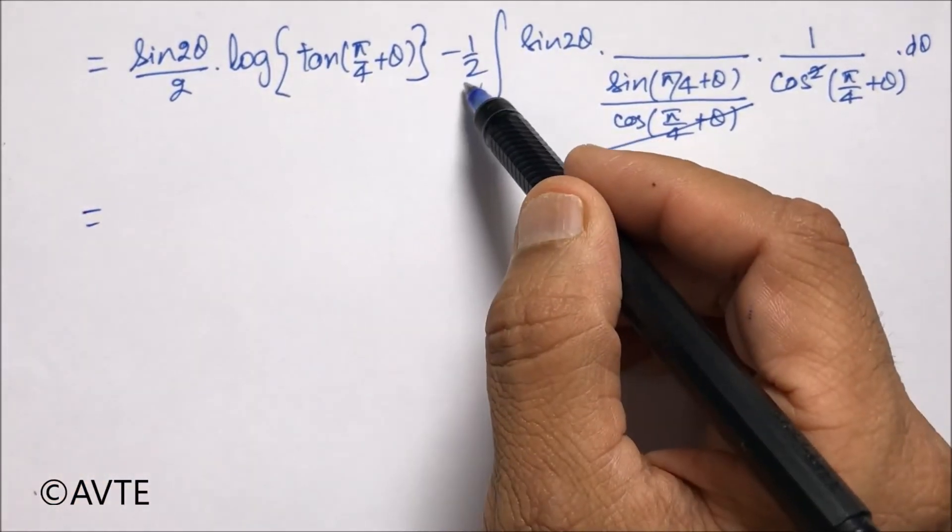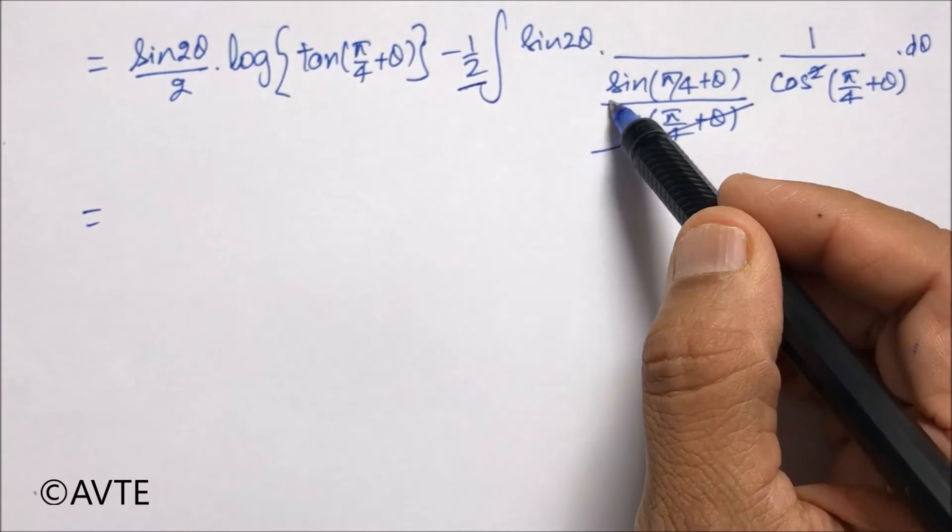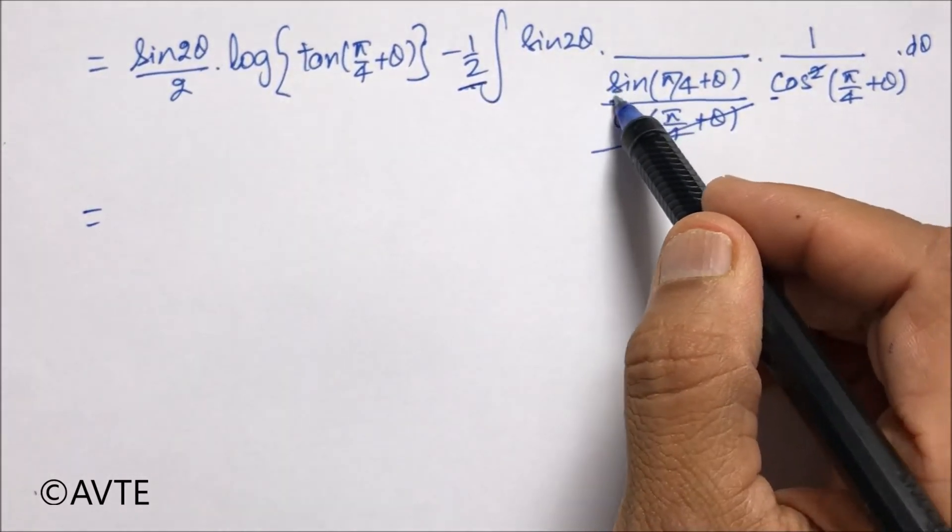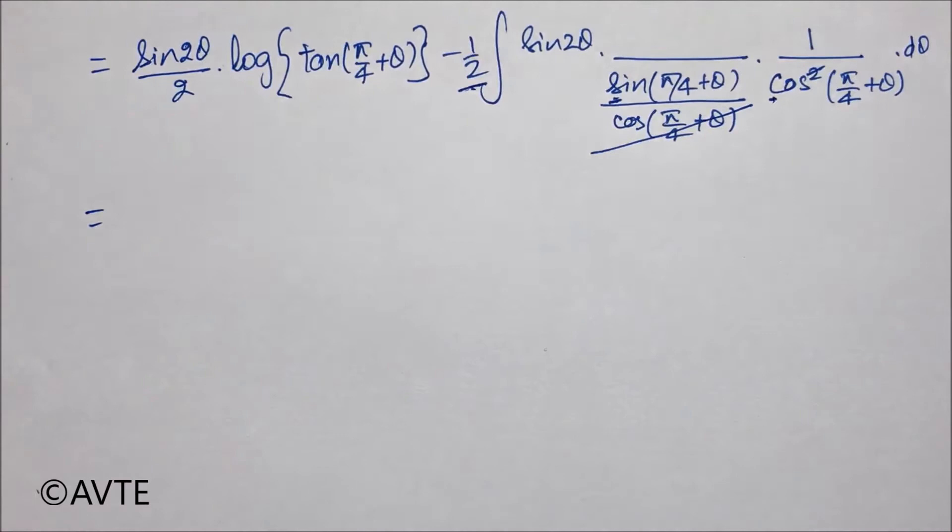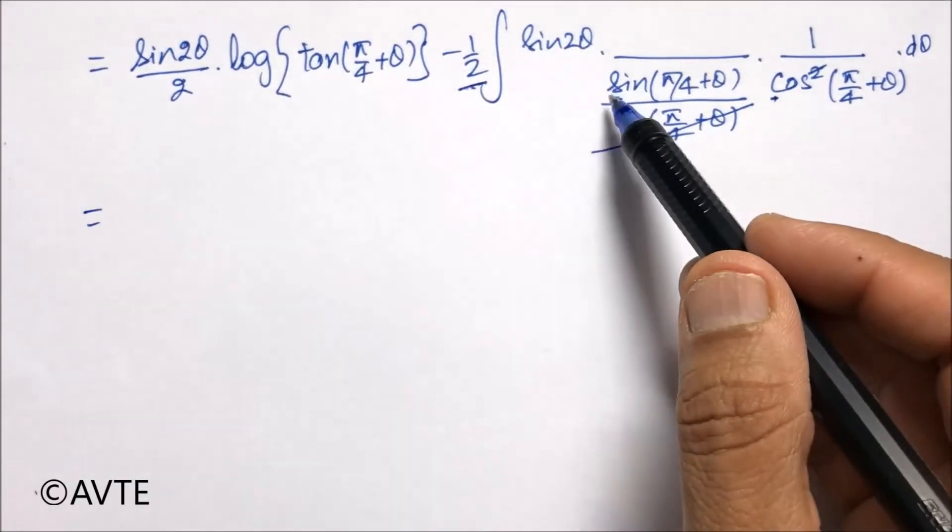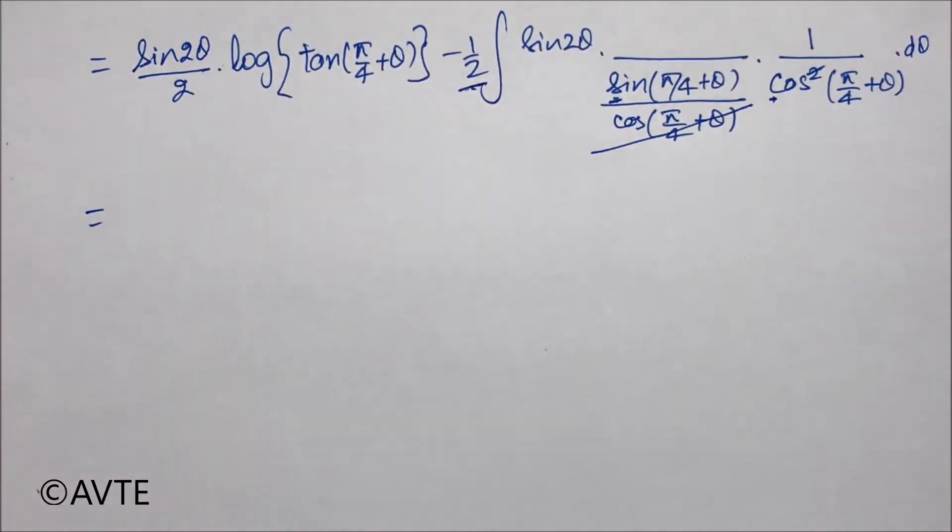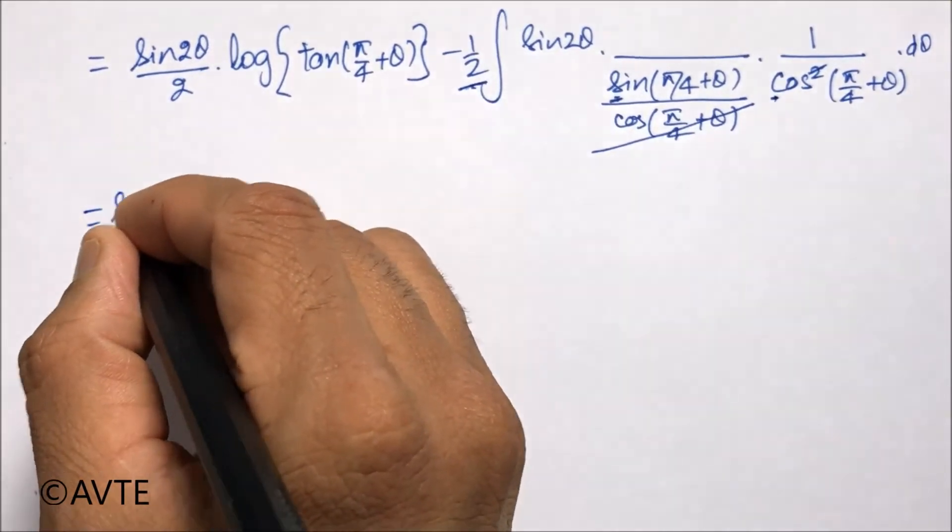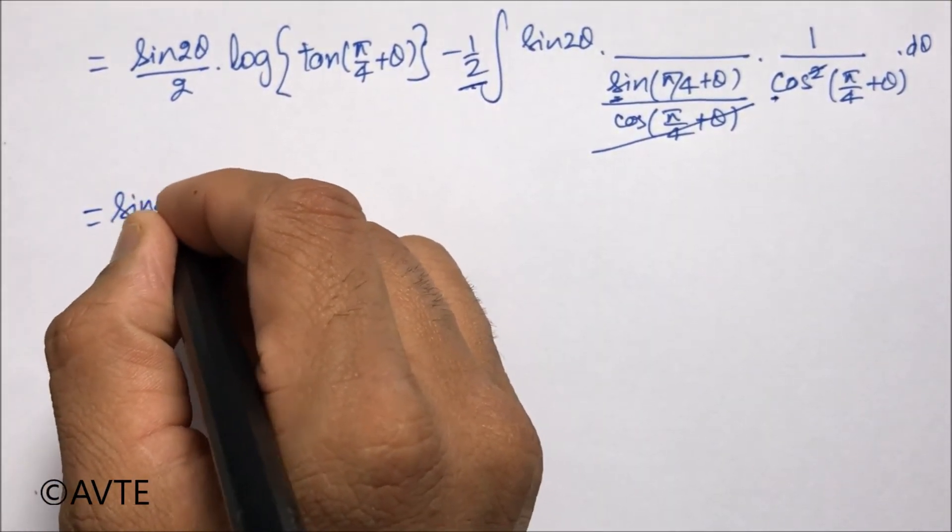And you utilize this 2 with sin and cos. So this 2 sin θ cos θ will do magic. This 2 sin θ cos θ will make it sin 2θ.